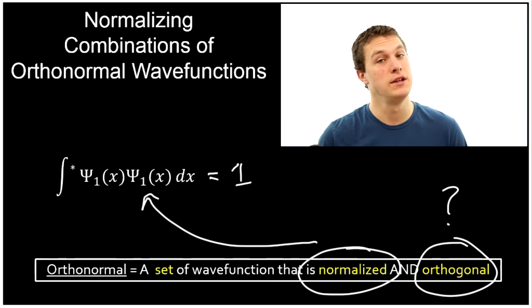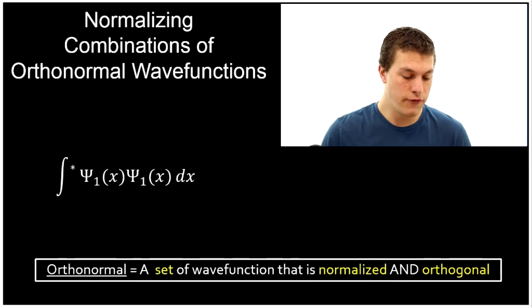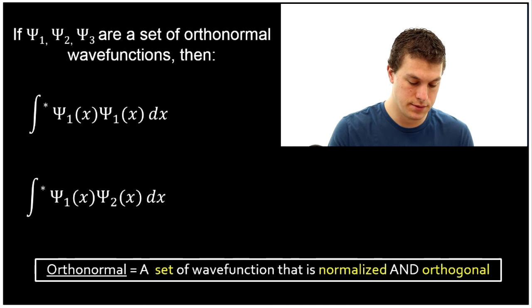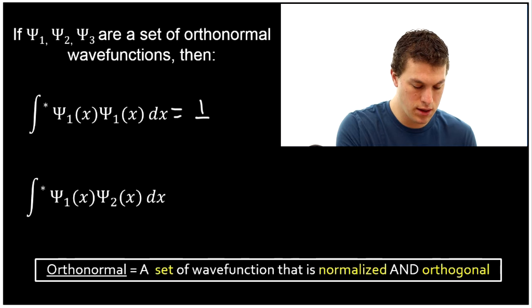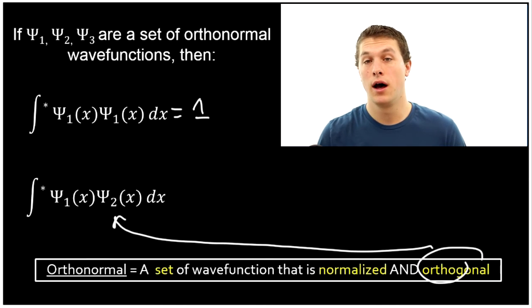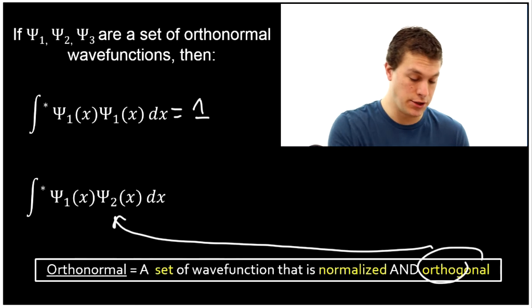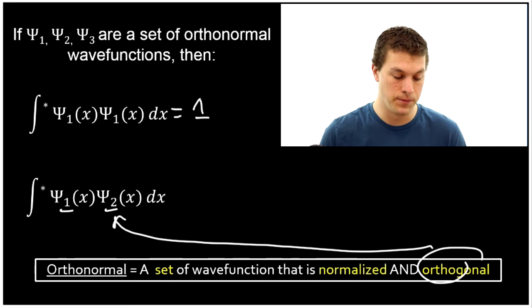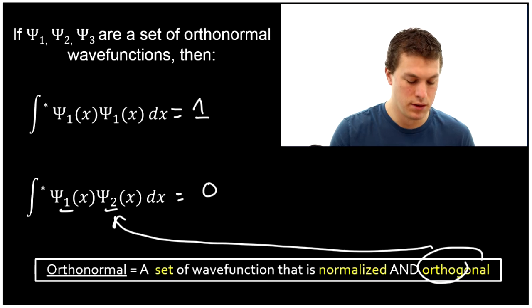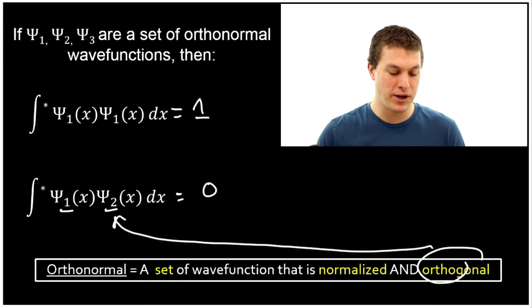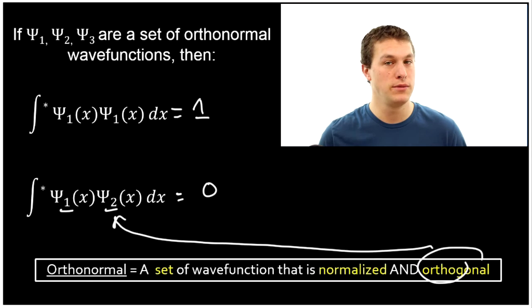Well, before we can say what orthogonal means, we have to be dealing with a collection of wave functions. So if we're dealing with a collection of wave functions — say, psi one, psi two, and psi three — and they're all ortho-normal, that means they're normalized: this top integral is equal to one. The orthogonal part applies to the integral when we have the integral of psi one times psi two. That is, we're not multiplying the same wave function — we're taking two different wave functions and multiplying them together. And it turns out that's equal to zero, which is always what you like things to be equal to if you want your math to be easy. So if we multiply psi one by psi two and integrate, we get zero. That's what it means to be orthogonal.